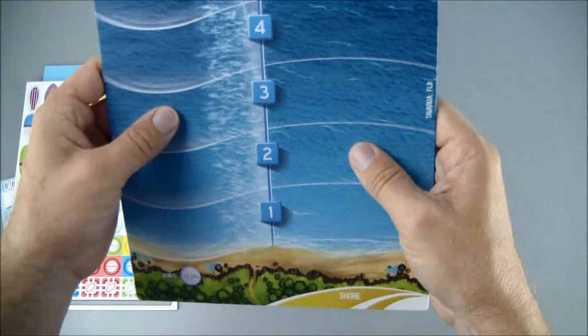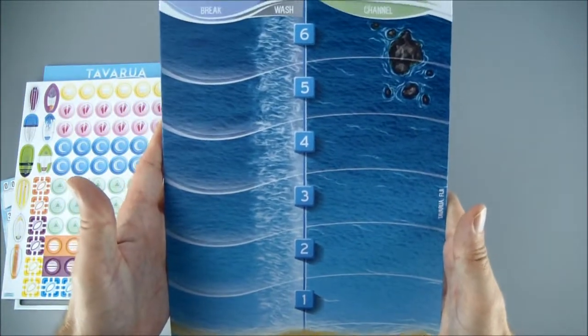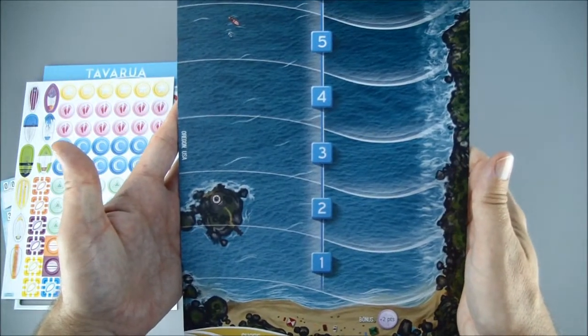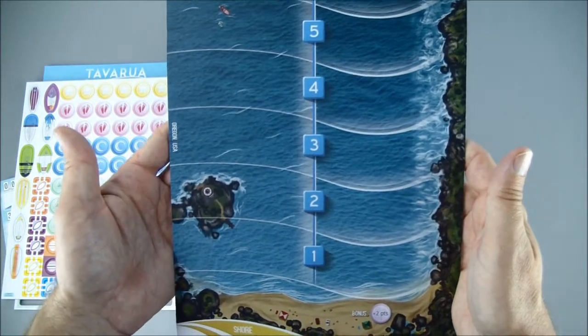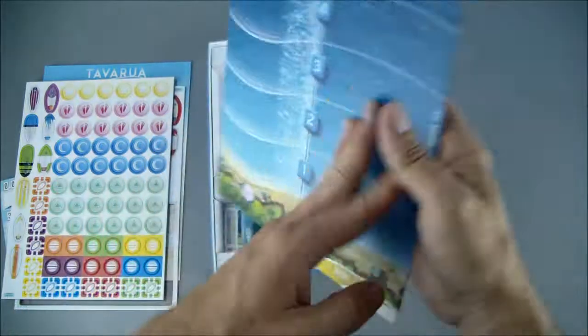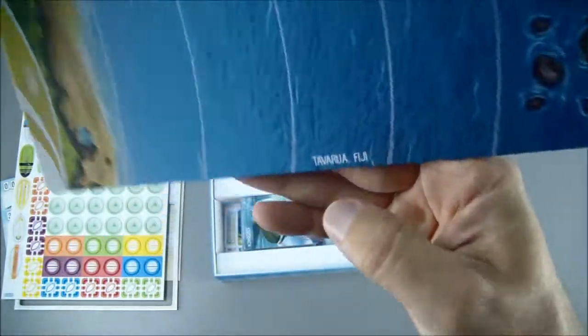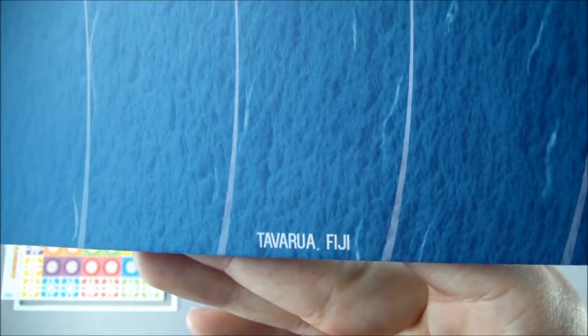This looks like the actual playing board, also double-sided. Says Oregon USA and Tavarua Fiji.